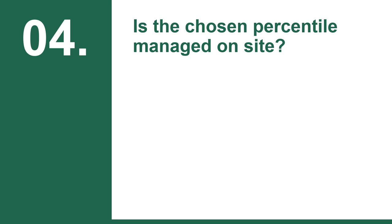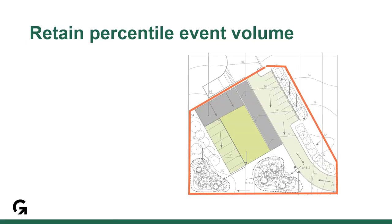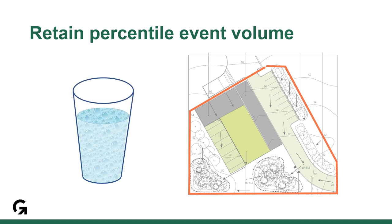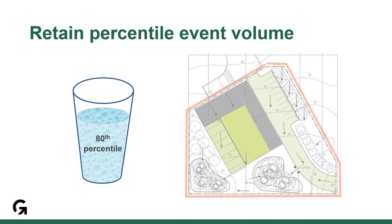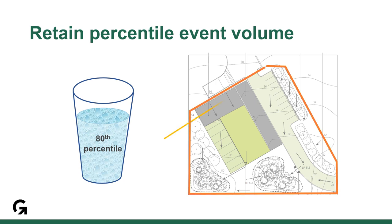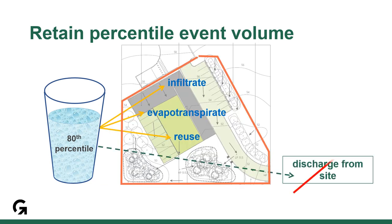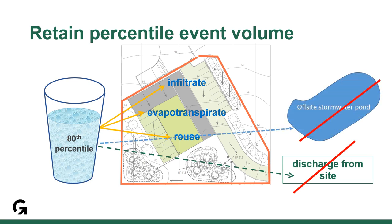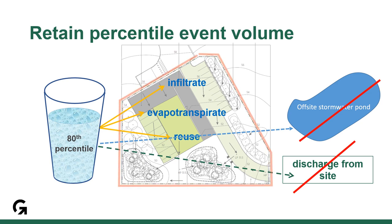Our fourth check is determining if the chosen percentile is actually managed on site. Consider the runoff volume as the volume of water in a cup — water that rains evenly over your site representing your 80th percentile rainfall event. That is the amount of water you need to keep on site and manage within your LEED project boundary. The only way it can leave the site is through infiltration, evapotranspiration, or collection for reuse — such as irrigation, toilet and urinal flushing, cooling towers, or vehicle washing. You cannot store it and release it to the sewer, and you cannot use best management practices off-site like a pond. It must be kept and dealt with on site.